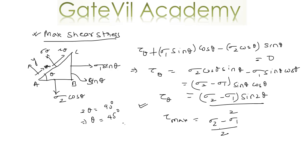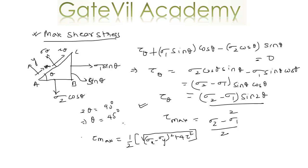On substituting the values of sigma 1 and sigma 2 that we got earlier, we will have tau max equal to half of the square root of sigma X minus sigma Y whole square plus 4 tau squared. So this is the expression for tau max. From this we can say that the maximum shear stress is one half of the algebraic difference between the principal stresses.